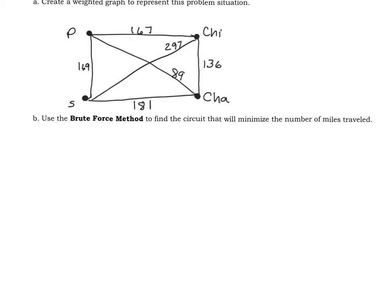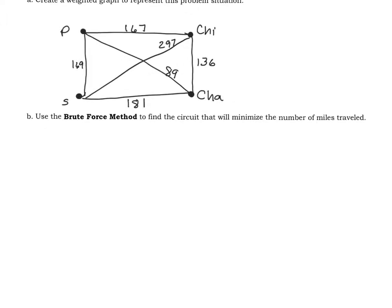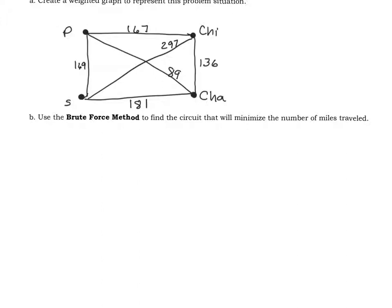So we're going to use a brute force method to find the circuit that will minimize the number of miles traveled. Now, let's look at all the Hamilton circuits that are possible. I have four vertices, so 4 minus 1 factorial is 3 factorial, which gives us the possibility of 6 circuits.